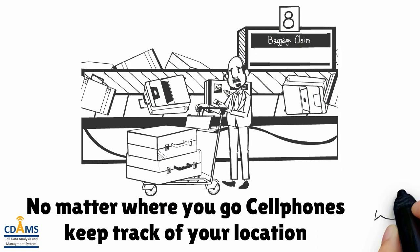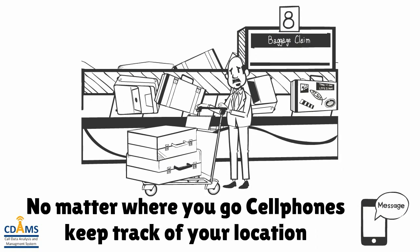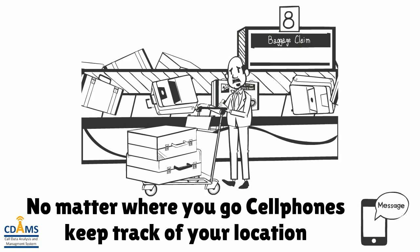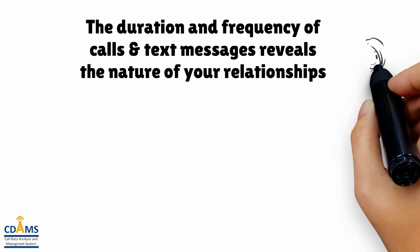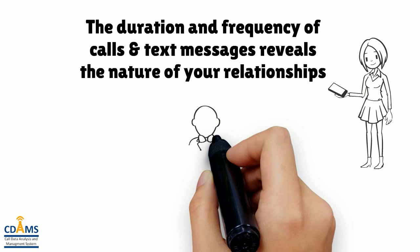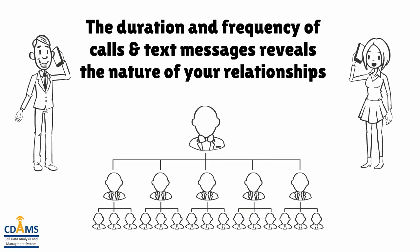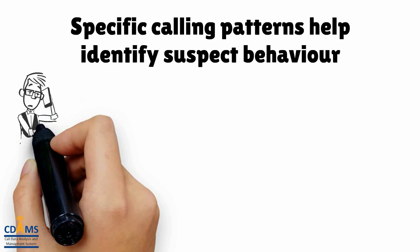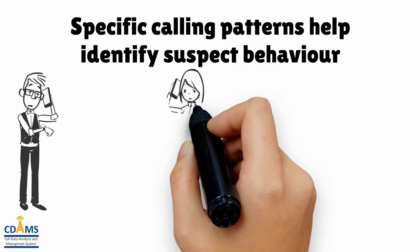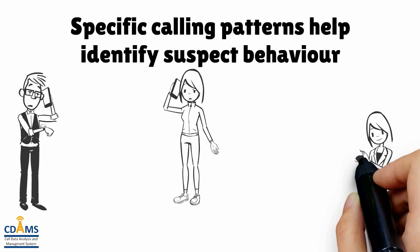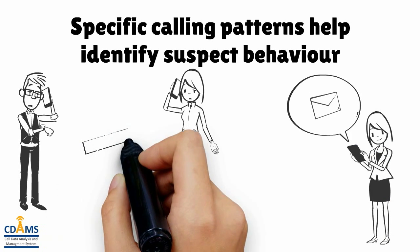No matter where you go, cell phones keep track of your location. The duration and frequency of calls and text messages reveals the nature of your relationships. Specific calling patterns help identify suspect behavior.